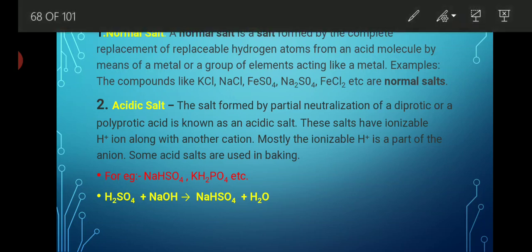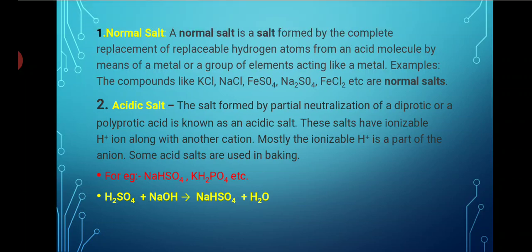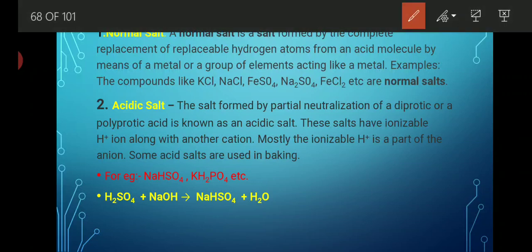Normal salt, or neutral salt, is a salt formed by the complete replacement of hydrogen atoms from an acid molecule by a metal or a group of elements acting like a metal. For example, KCl, NaCl, FeSO₄, Na₂SO₄, FeCl₂ are all normal salts. Whenever a strong acid reacts with a strong base, complete neutralization occurs and a normal (neutral) salt is formed, because the hydrogen atoms are completely replaced by the base.